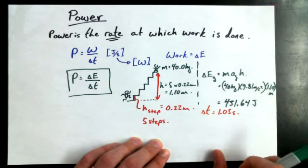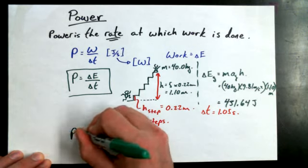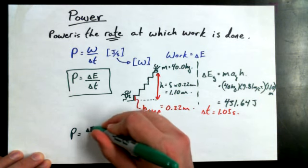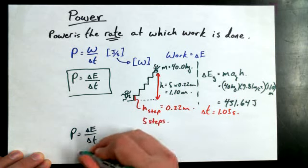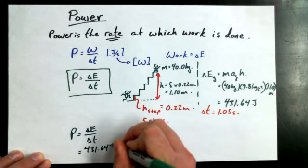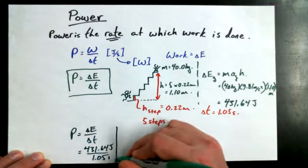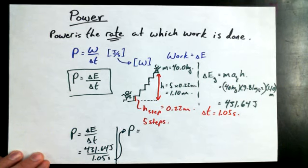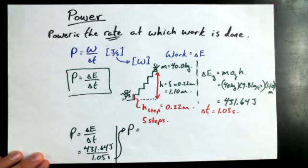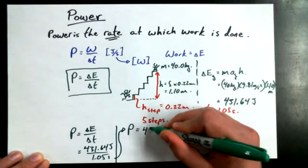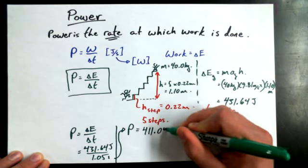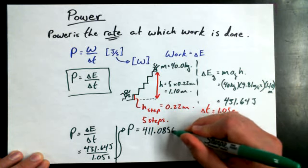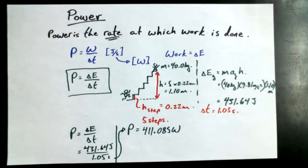Let's figure out how much power this person was able to develop as they went up. So the power that they are able to develop is changing energy, which is really the changing gravitational potential energy divided by the amount of time that goes by, which is going to be 431.64 joules divided by 1.05 seconds. How much power? Double guessing. 411.085. 411.085. And we can say joules per second, or we can say watts. So we can say, oh, this person used 411.085 watts.